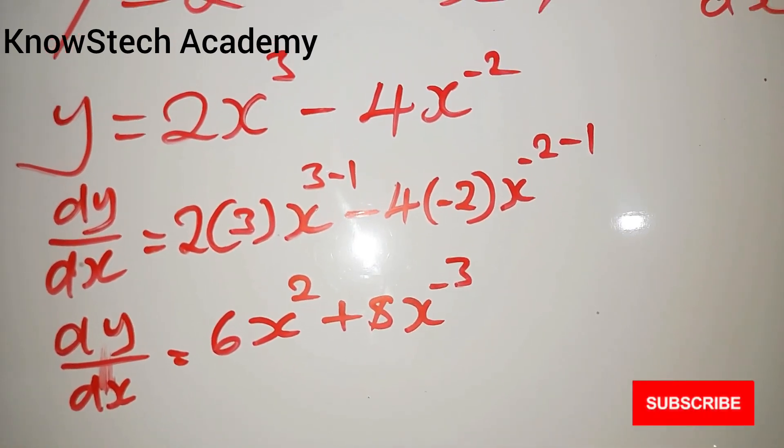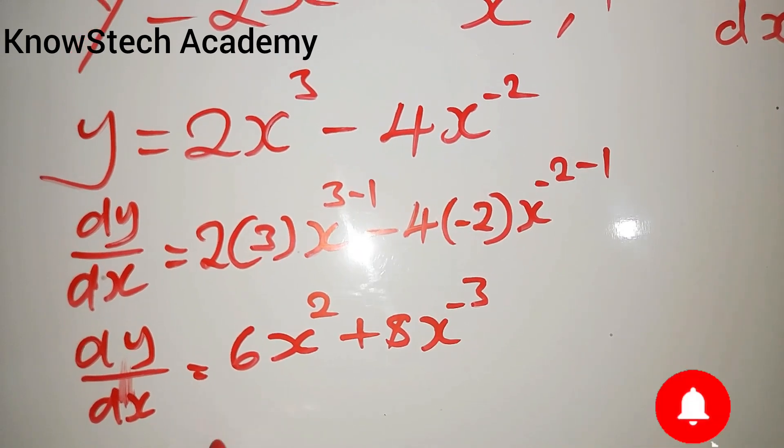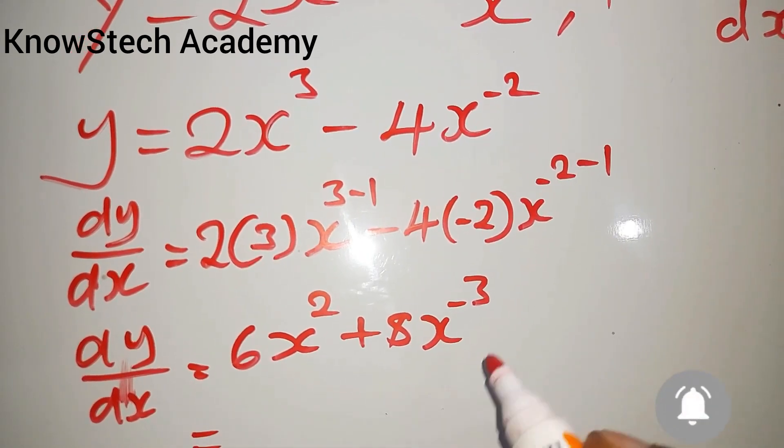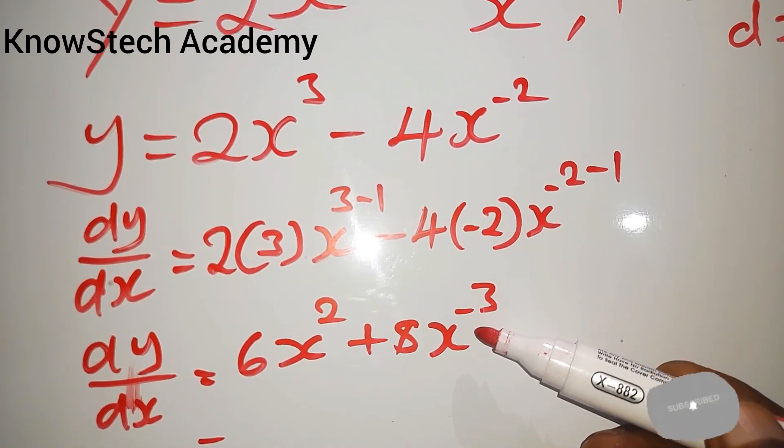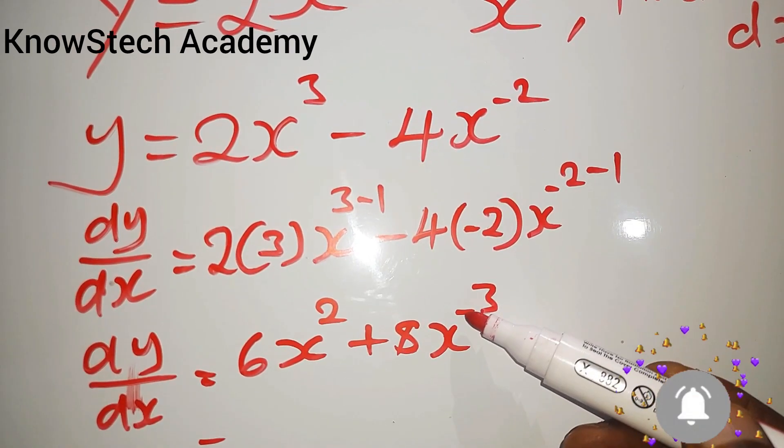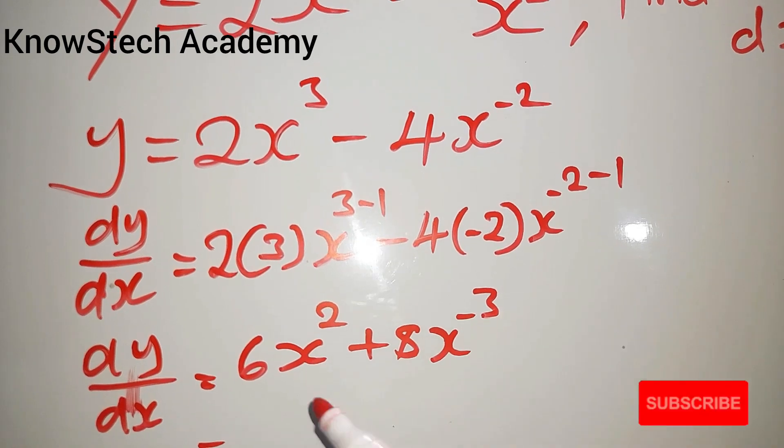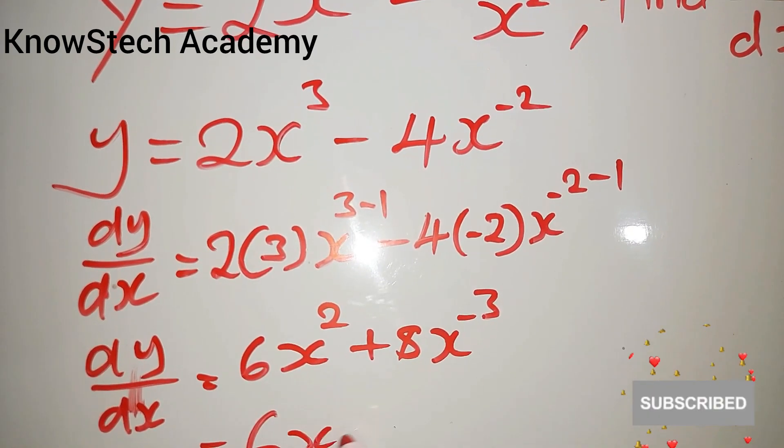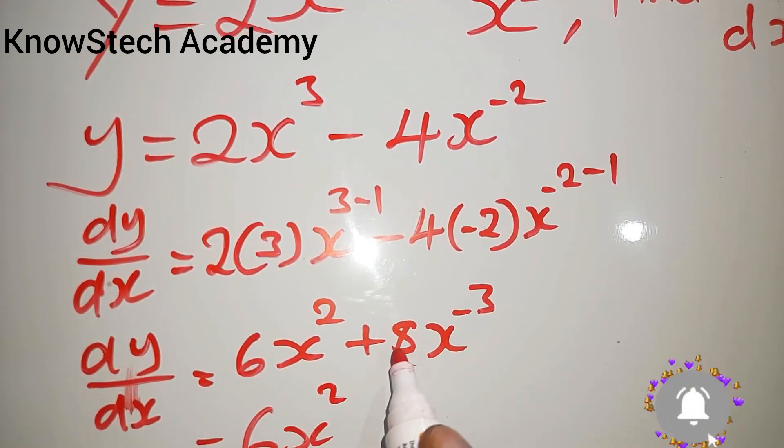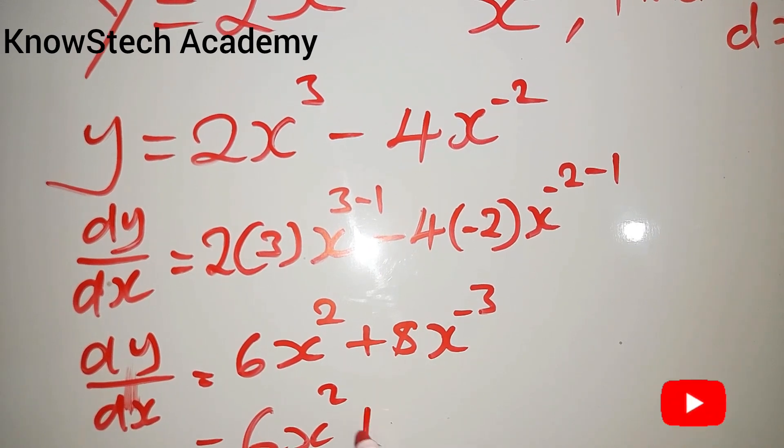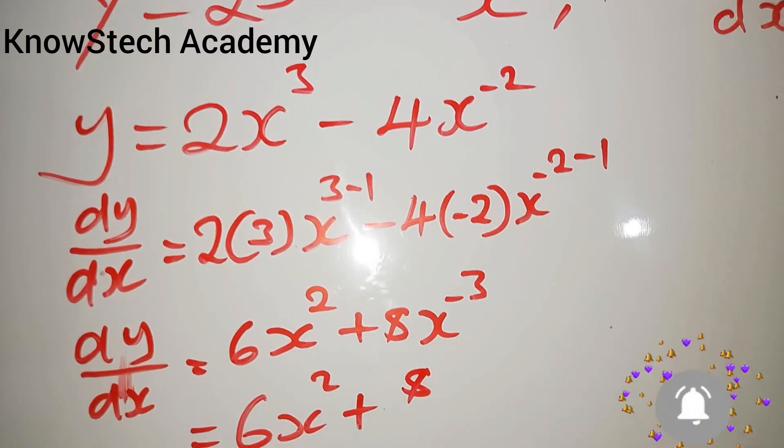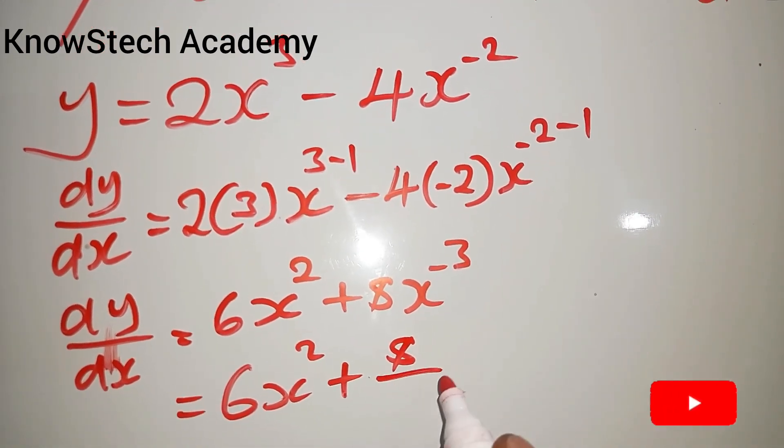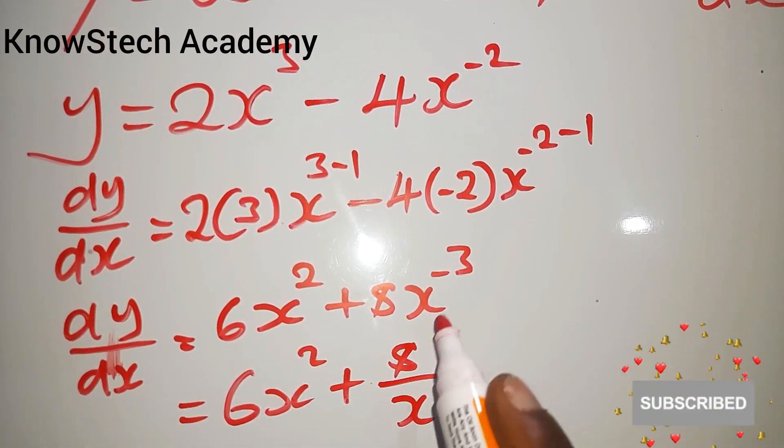Now let's change this one to its original form. This term which is negative, we should leave it as a positive exponent. So the positive 8 here will be our numerator over x to the power positive 3. And this is the answer.